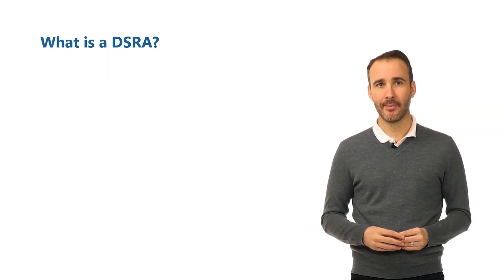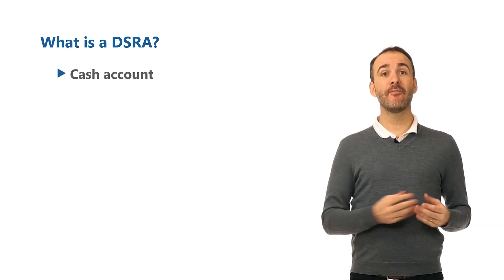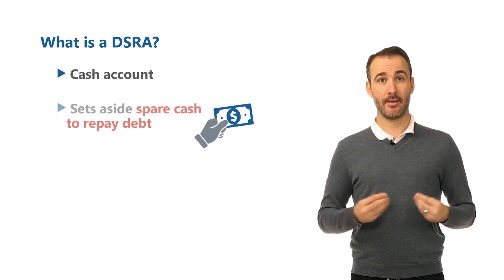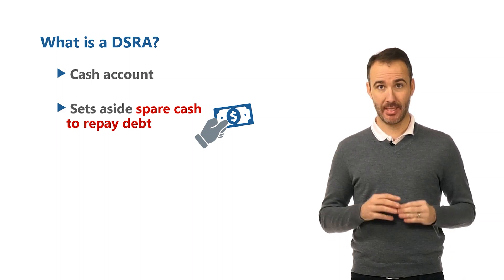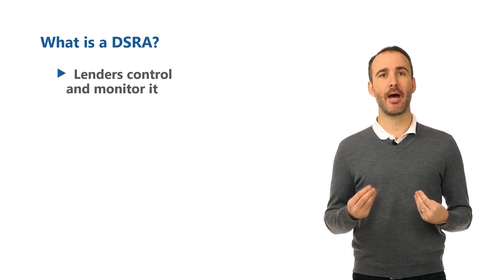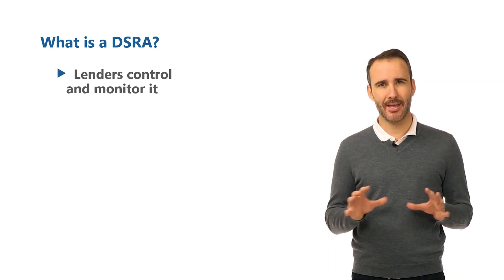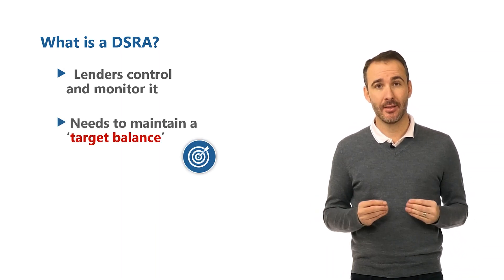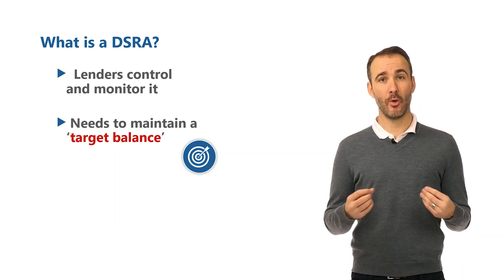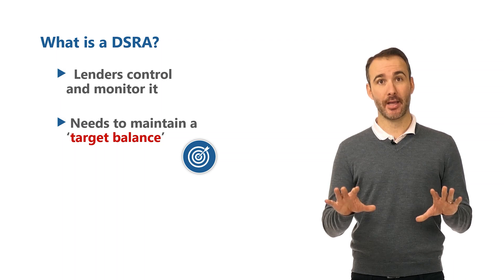So what is a DSRA? It's a cash account that retains money for when CADS is too low to service debt. This account is cash security for the lenders, so lenders will monitor the amount within the account. The DSRA needs to maintain enough cash to pay for debt service when CADS is too low, and this amount it needs to retain is called a target balance. The DSRA is a pretty complex part of a project finance model, so before we start doing any calculations, we should first understand its four elements. Details on how to calculate these elements will come in the next lesson.